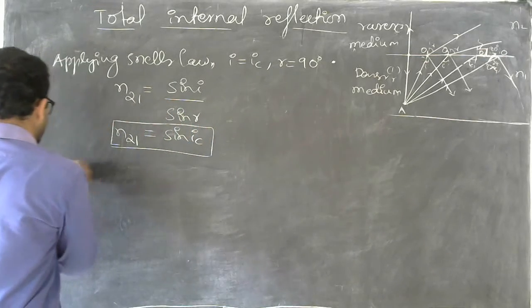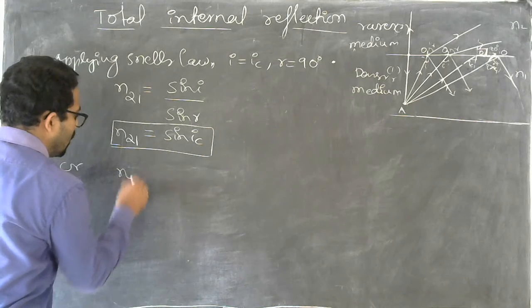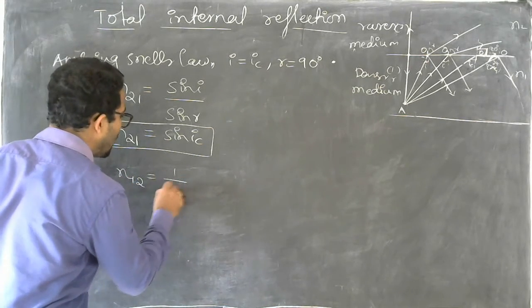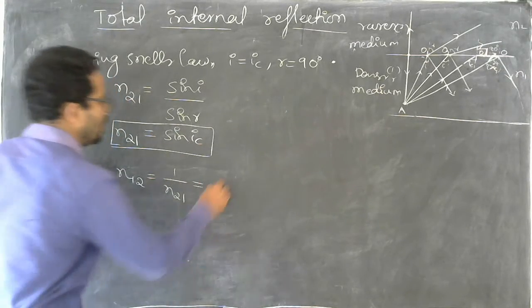you can write this as n12 is equal to 1 by n21, which is equal to 1 by sine ic.